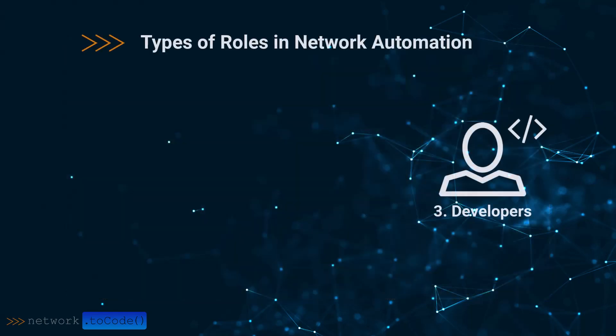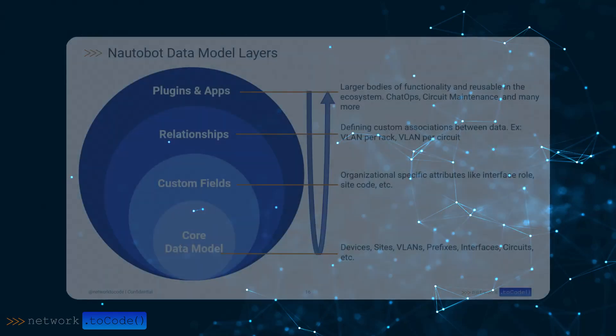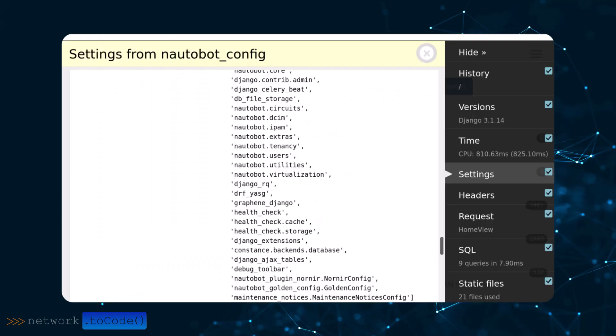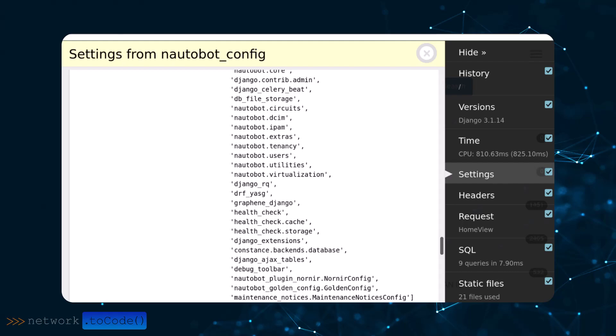The third group, developers, tweak existing code or write new code to make your organization more productive. They must consider complex structures like the data model layers. Many parts must come together to create a new application. You could have something specific for your organization and even contribute to the open source community. With NTC training, you can do this.